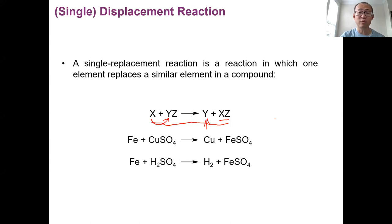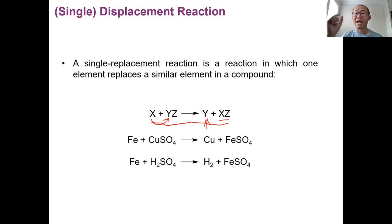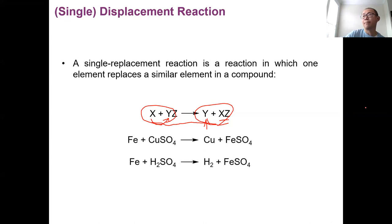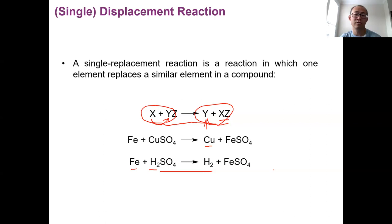The most characteristic way of recognizing a single displacement reaction is that both the reactant and product must contain an element and a compound — X·YZ or Y·XZ — an element and a compound. The bottom two are examples: the first is iron displacing copper, so you get copper as a free element. The second example is iron displacing hydrogen. In both cases, iron enters the compound and combines with sulfate to give copper(II) sulfate. Those are examples of single displacement, or sometimes called displacement reaction.